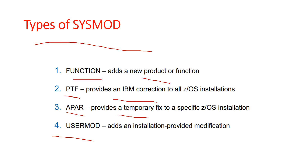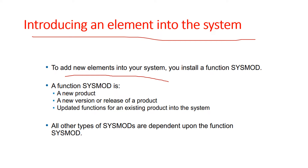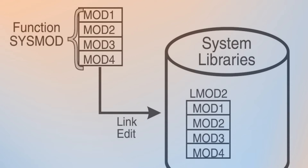Let's understand each one in detail. First is the Function SYSMOD, which introduces an element into the system. Its usage is to add a new element to your system. A Function SYSMOD represents a new product, new version, or release of a product, or an update to a function from an existing product. All other types of SYSMODs depend upon the Function SYSMOD, because they are all modifications of elements originally introduced by the Function SYSMOD. Function SYSMODs are referred to as FM IDs.